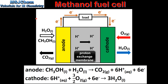And finally we look at a methanol fuel cell. In a methanol fuel cell the fuel is a mixture of water and methanol. At the anode methanol is oxidized. This produces carbon dioxide, hydrogen ions and electrons. The electrons flow through the external circuit from the anode to the cathode.